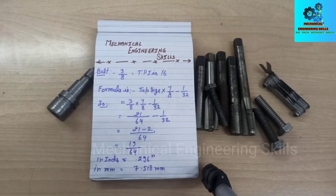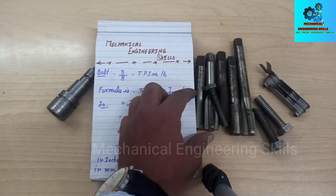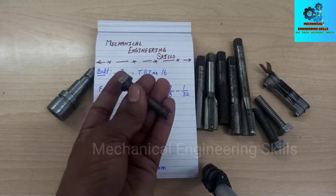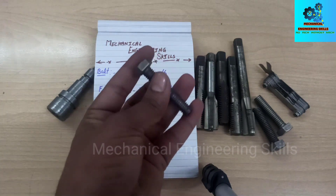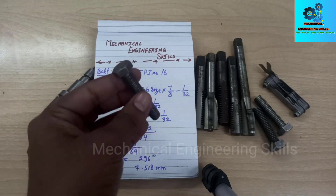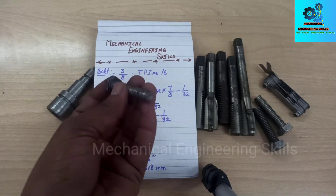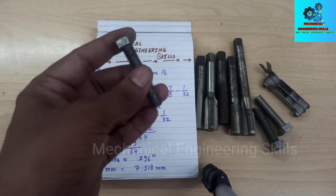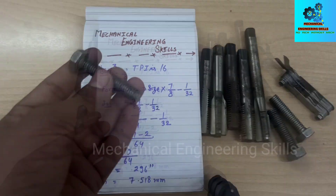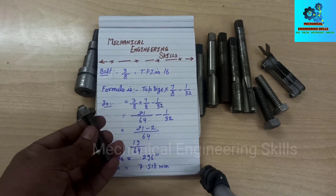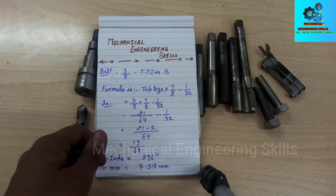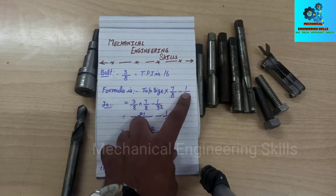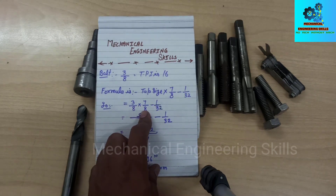I will prove it by taking an example. Here is a bolt whose size is 3/8 inch — in Hindi we can also call it '3 sooth.' We need to calculate the drill size for this bolt. We will use the formula: Tap Size × (7/8) − (1/32).